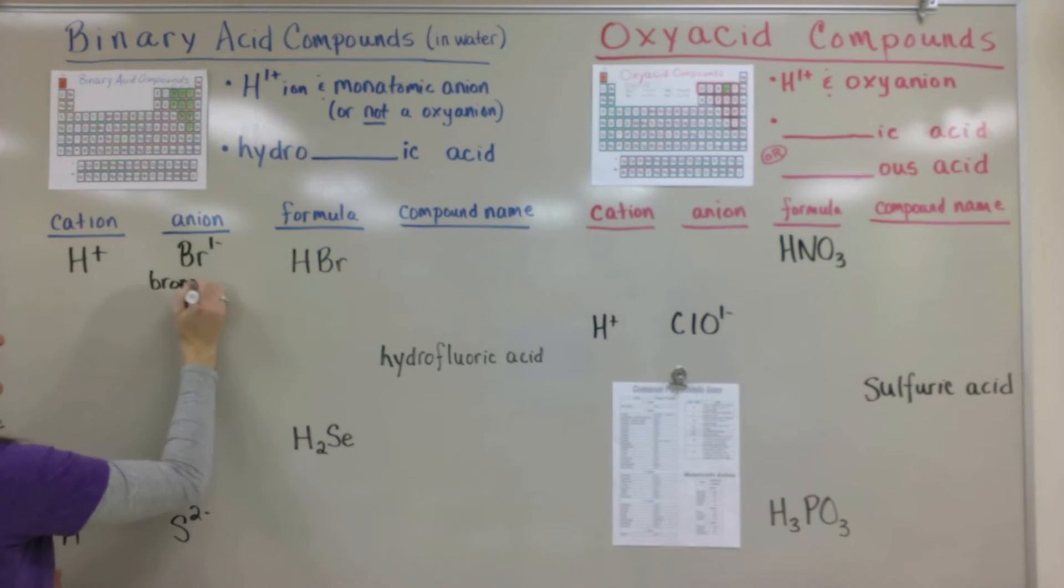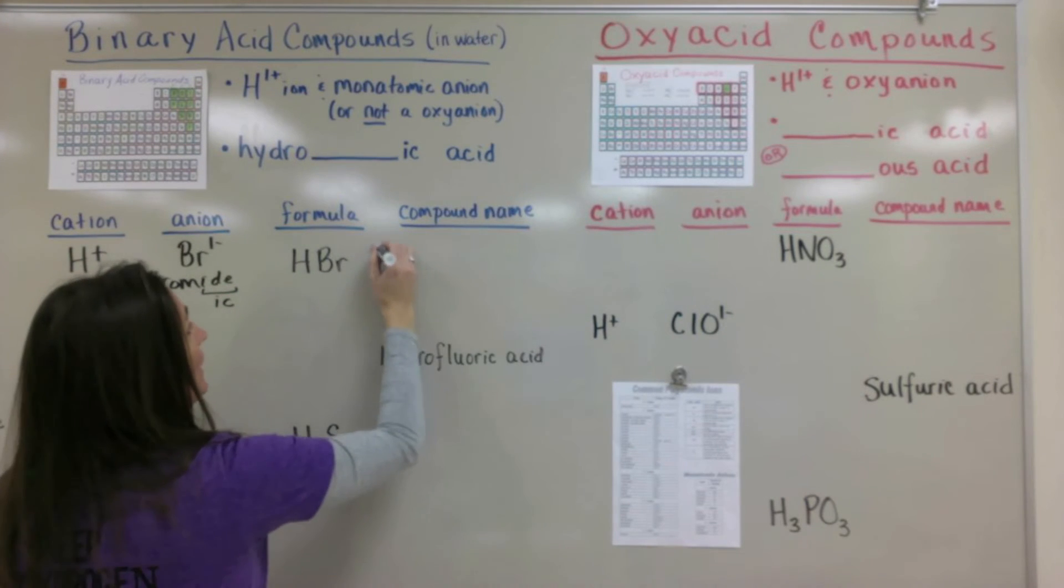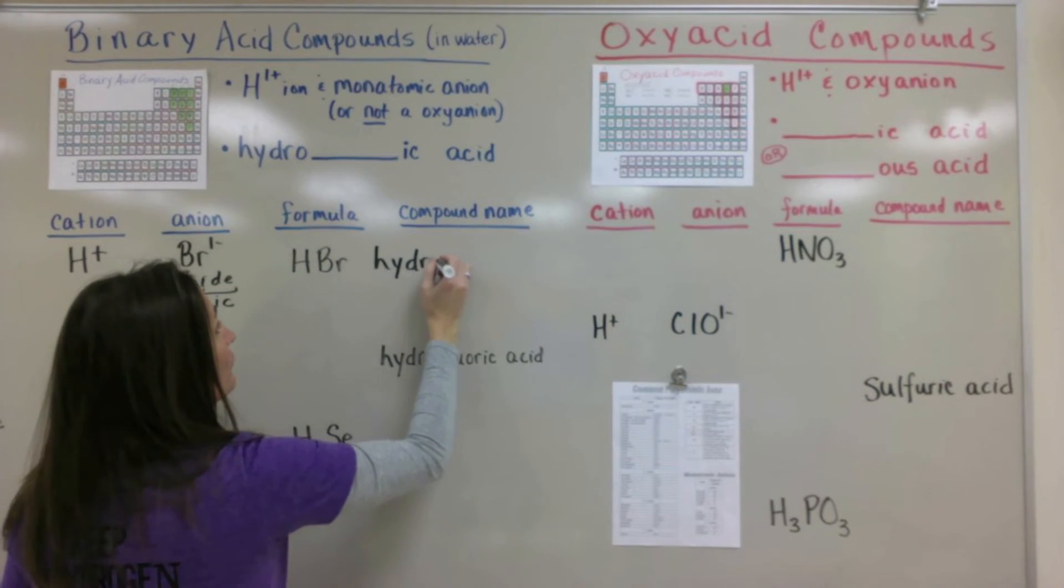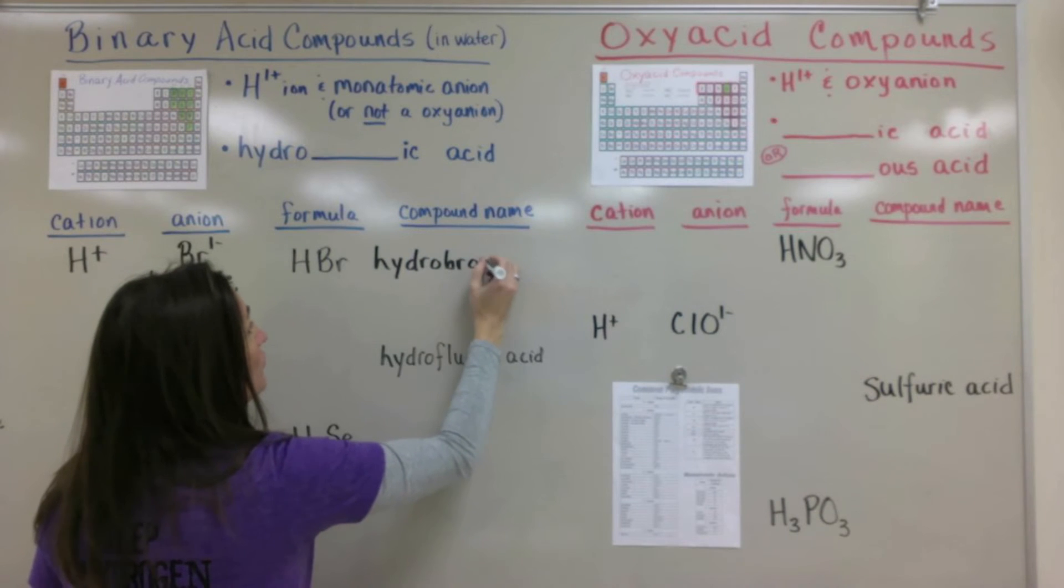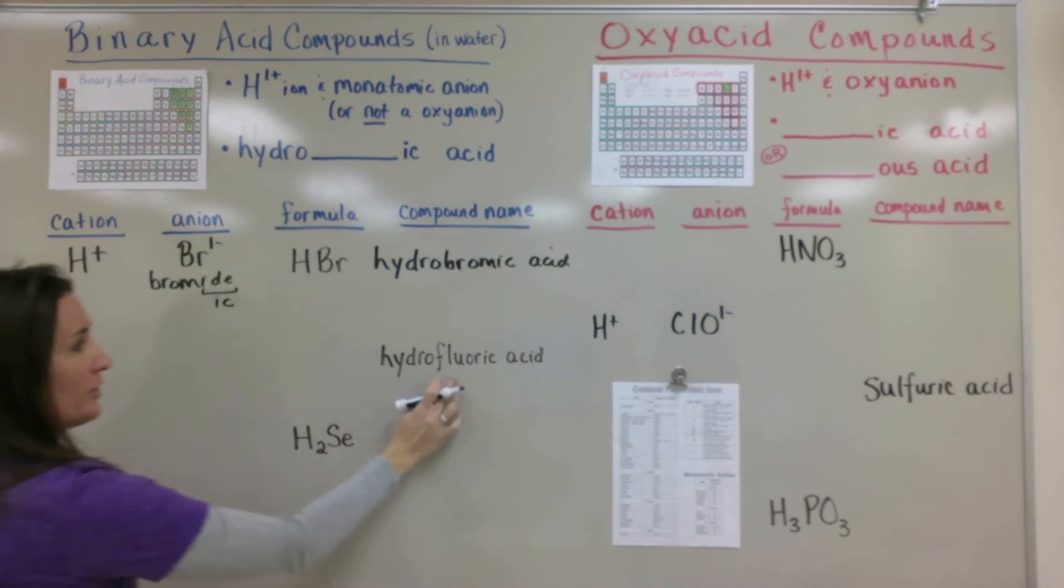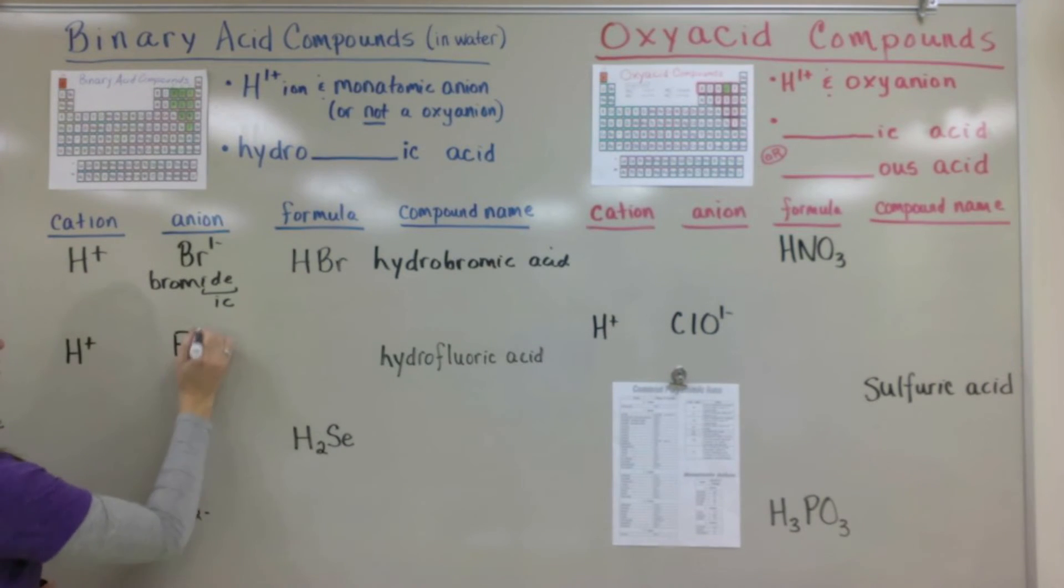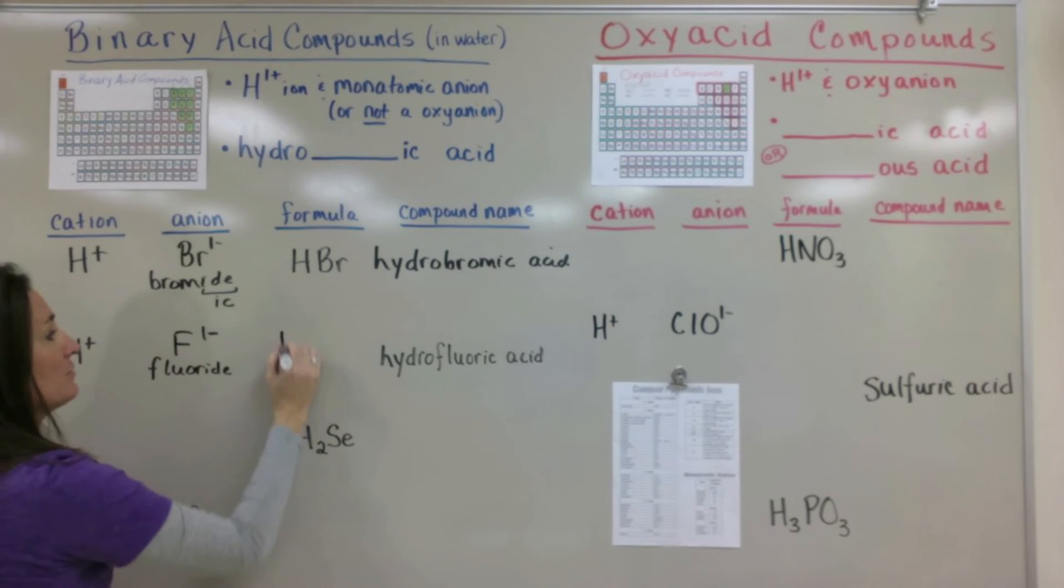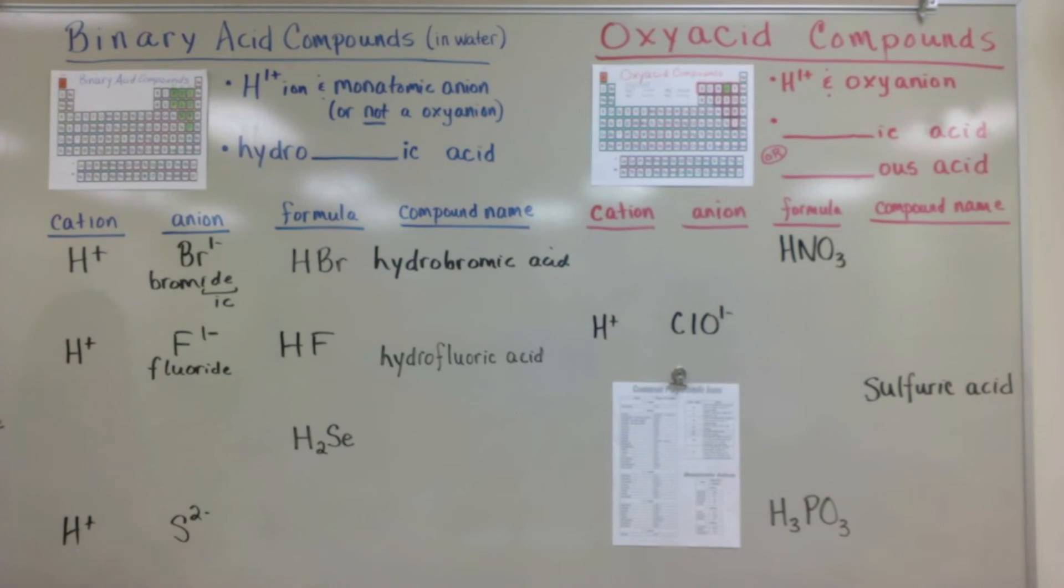For the binary acids they all contain the hydrogen cation and then some monatomic anion off of the periodic table. In this case bromide. And then the rules state to turn ide into ic and then add the word hydro in the front of the name. So it's hydrobromic acid. The next one what that means is we have the hydrogen ion and then fluoric came from fluoride which is F 1- again predicted off its placement on the periodic table. And then because it's +1 and -1 you just put those two elements together to make the compound HF.